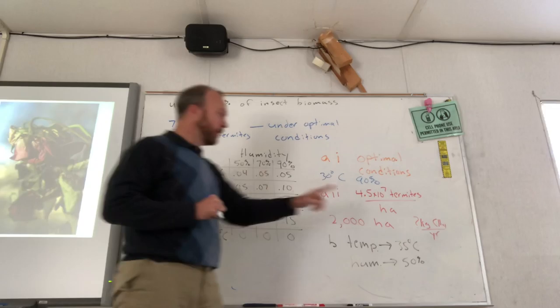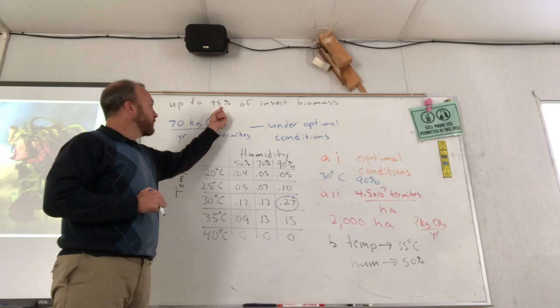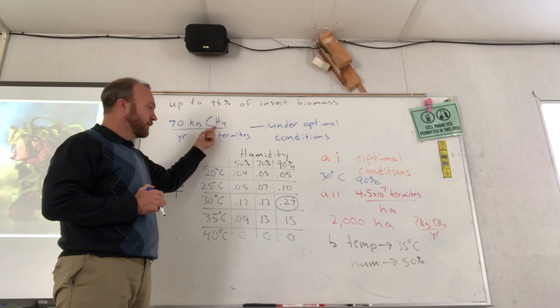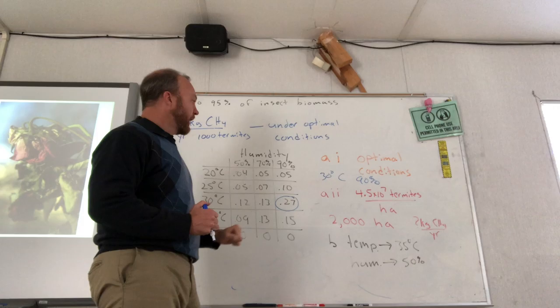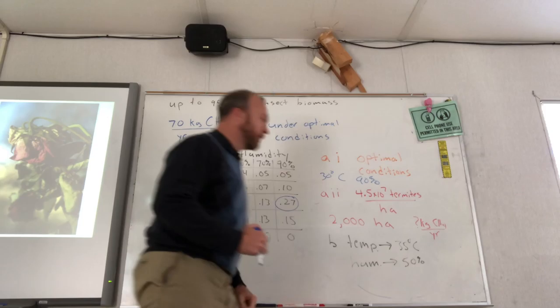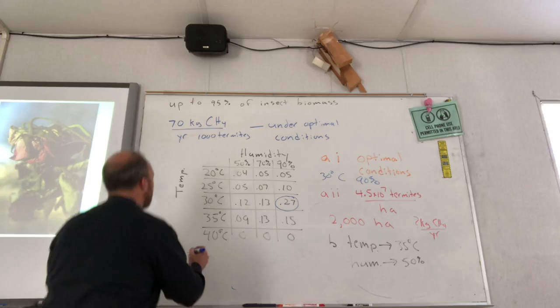So what I'm looking for here is kilograms of methane. So let's look at all the things that I know. 95% of insect biomass possibly has nothing to do with the kilograms. Look, here's kilograms of methane. Look, kilograms of methane per year. Look, kilograms of methane per year. This almost has what I want. So I want to start with a quantity that gives me what I'm looking for. Kilograms. I don't want to start with termites because that's not what I'm looking for. I don't want to start with hectares. That's not what I'm looking for.